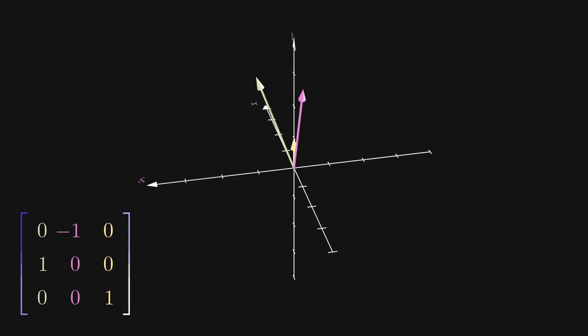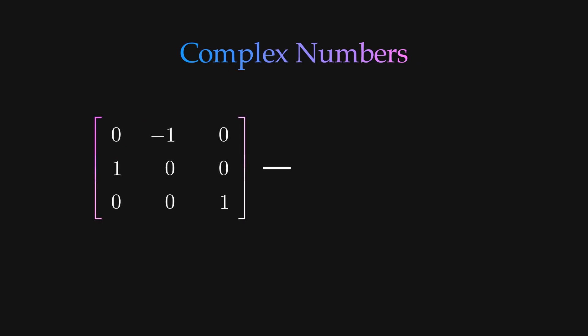Now this is where things get a little tricky, because we have to talk about complex numbers. While our transformation is unable to be diagonalized with real number entries, it can be diagonalized when we allow i, the square root of negative 1.